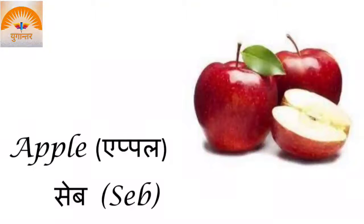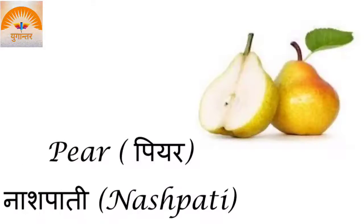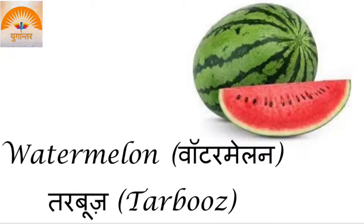Apple — we call it Seb. Seb. Pomegranate — Anaar. Anaar. Pear — Nashpati. Nashpati. Watermelon — Terbooze. Terbooze.